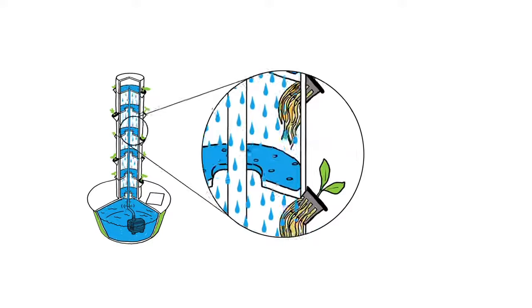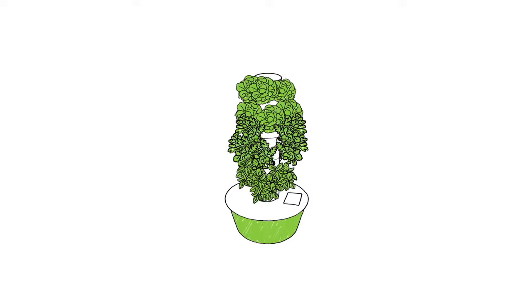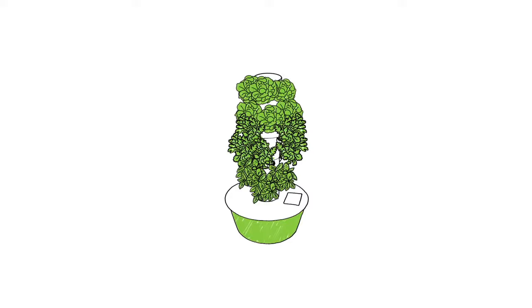This patented aeroponic process enables food crops to grow faster than they would in soil, so they can be harvested more often. And it makes Tower Garden the healthier, easier, smarter way to grow your produce.